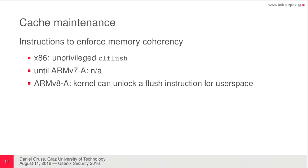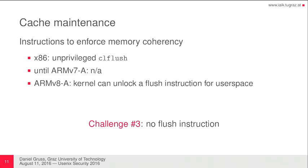Another challenge: to perform a Flush and Reload attack, you have to flush something from memory. On x86, that's easy because you have an unprivileged flush instruction any process can use at any time. On ARMv7, flush instructions are privileged, so user space cannot flush memory. On ARMv8, you can unlock a flush instruction for user space, and this is done by off-the-shelf devices — for instance, the Samsung Galaxy S6. So the challenge focuses on ARMv7a, where we have no flush instruction and need to figure out how to do that.